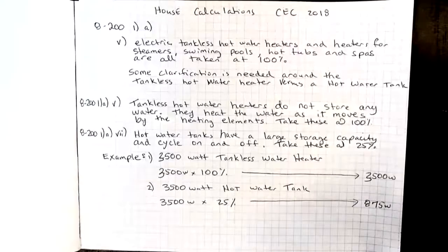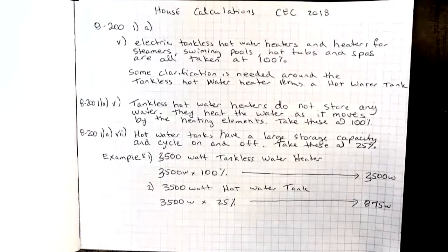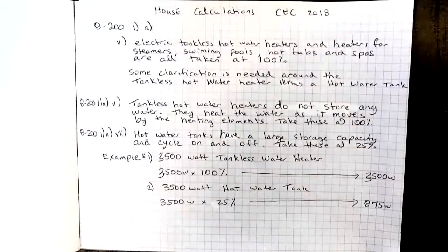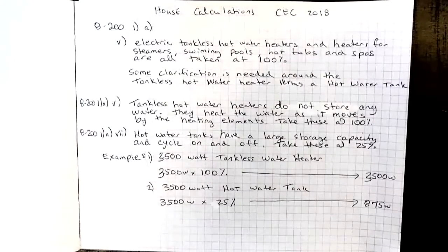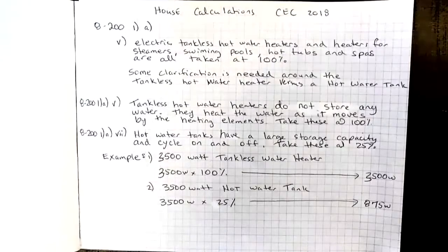The next rule in this series of videos is 8201A item 5, and it's talking about electric tankless hot water heaters and heaters for steamers, swimming pools, hot tubs, and spas. These are all taken at 100% when we're trying to figure out the demand factors for the main service load calculations.